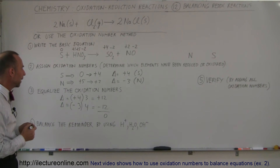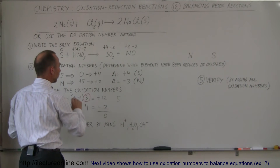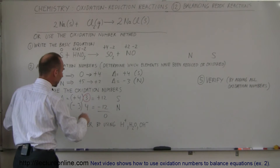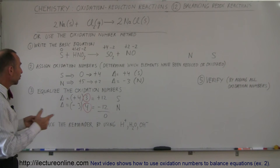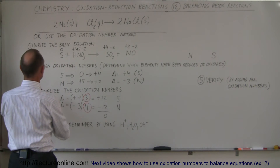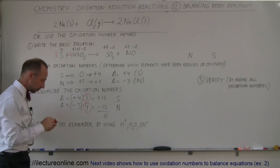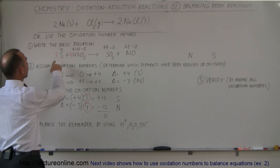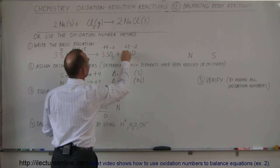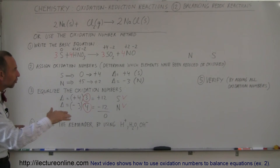Which element had an increase of plus four? It was sulfur — sulfur will need a three in front of it to balance the oxidation numbers. Which element had a reduction of minus three? That was nitrogen — nitrogen will need a four in front of it. So we put a three in front of sulfur and a four in front of nitrogen. Now we put a three in front of sulfur dioxide and a four in front of nitric oxide, so sulfur and nitrogen are both balanced.